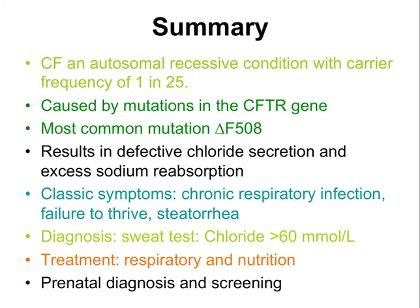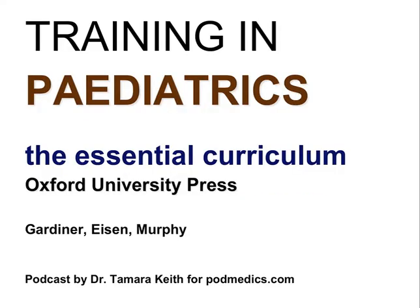In summary, cystic fibrosis is an autosomal recessive condition with a carrier frequency of 1 in 25. It is caused by mutations in the CFTR gene, most commonly the delta F508, resulting in defective chloride secretion and excess sodium reabsorption. The classic symptoms are chronic respiratory infection, failure to thrive and malabsorption with steatorrhea. Diagnosis involves a sweat test with chloride over 60 mmol/L. Treatment is both respiratory and nutritional, and prenatal diagnosis and screening is available. This talk is based on the book Training in Paediatrics: The Essential Curriculum. Thank you for listening.